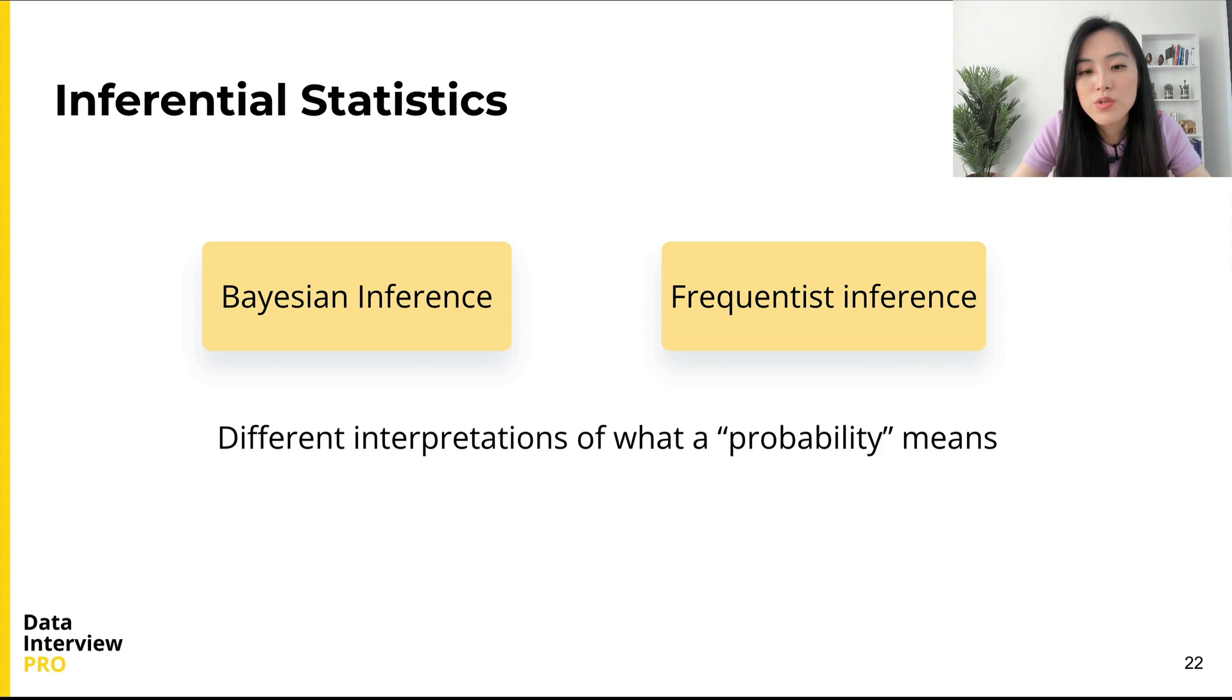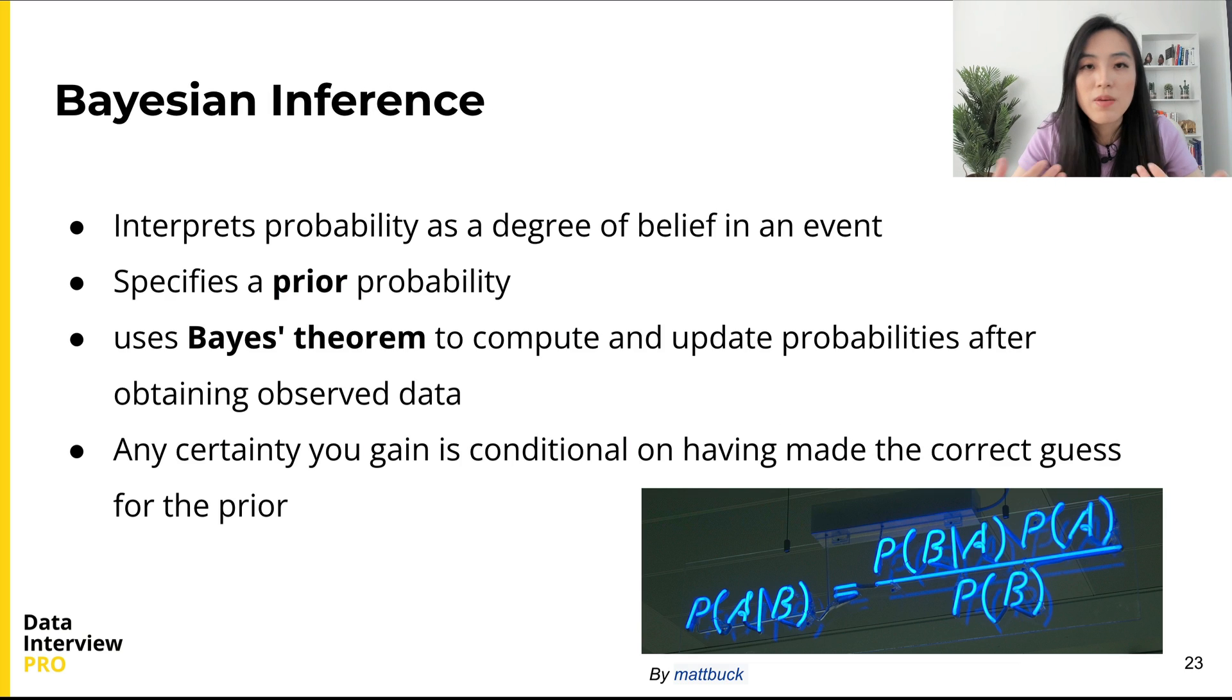In fact, there are two schools of inferential statistics, Bayesian inference and the frequentist inference. The difference between them is based on their interpretations of what a probability means. The Bayesian approach interprets the probability as a degree of belief in an event. It specifies that there is some prior probability. The prior probability may be based on prior knowledge about the event,